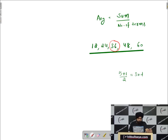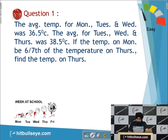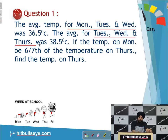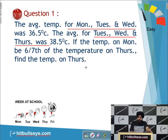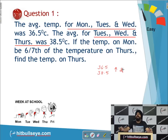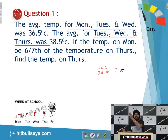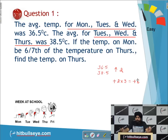In this question, the average temperature for three days is given — first set and second set — with two days in common and one separate day. The earlier average is 36.5 and the new average is 38.5, an increase of 2. With three terms, adding 2 to each gives a total addition of 6.